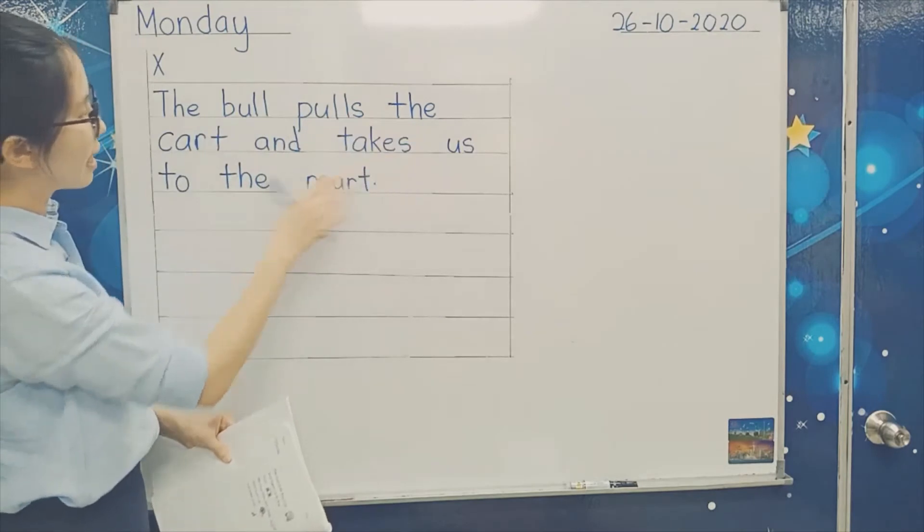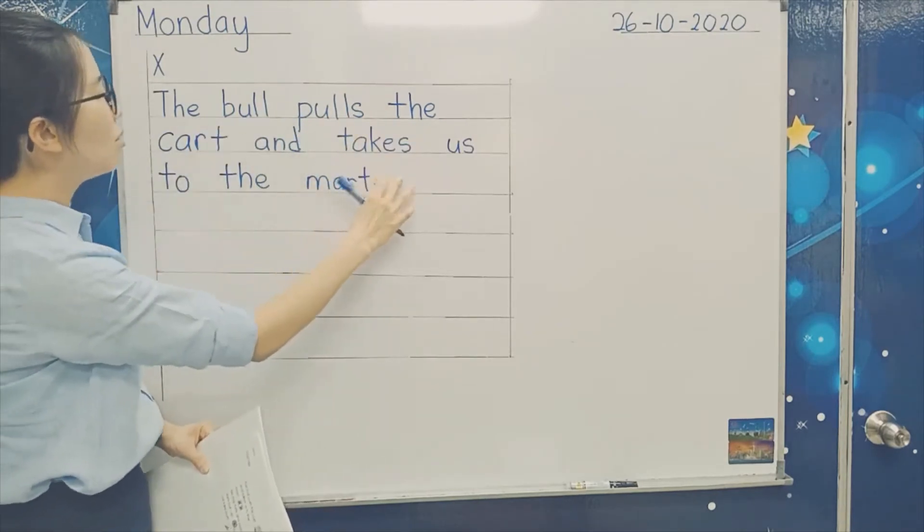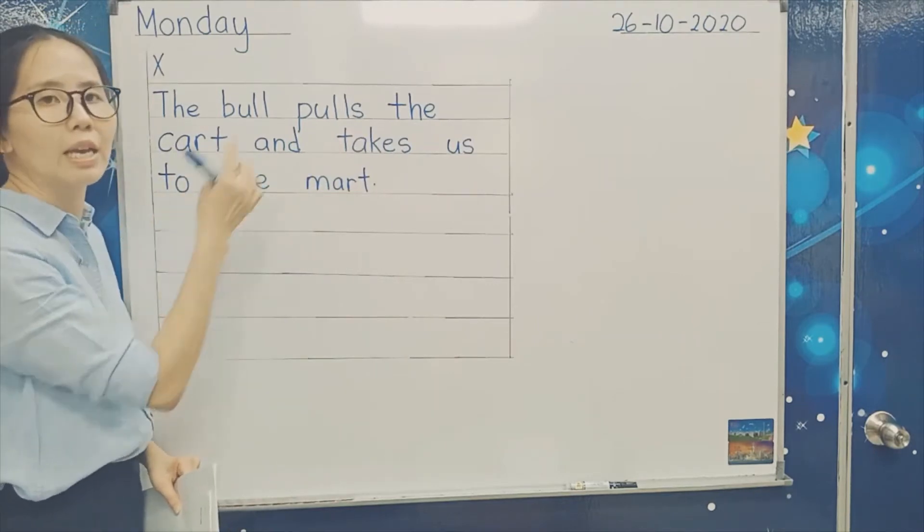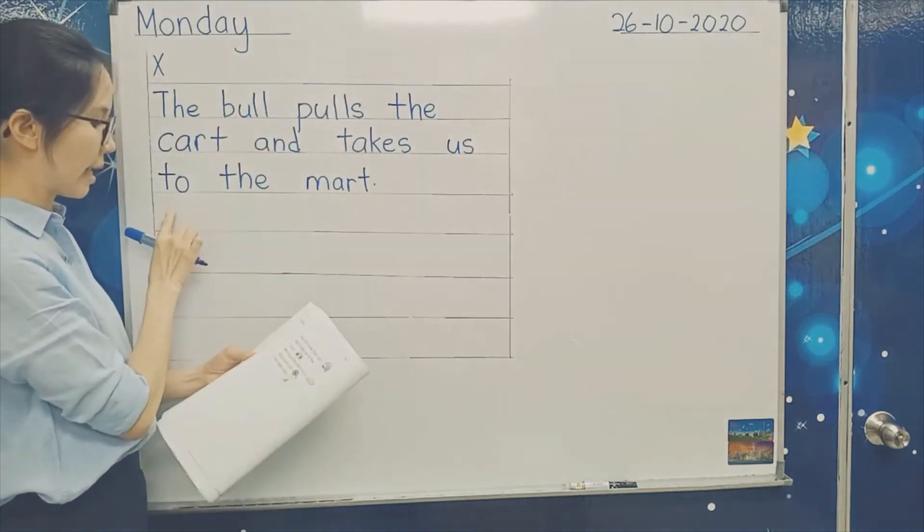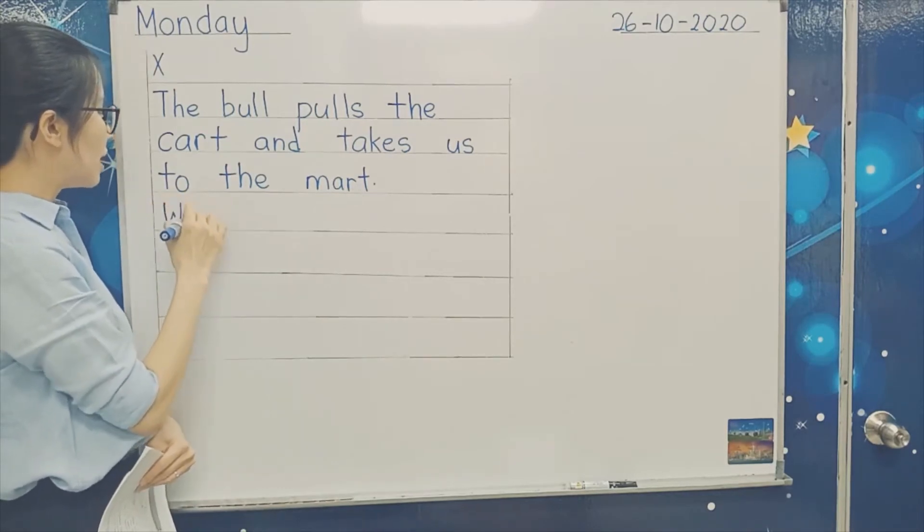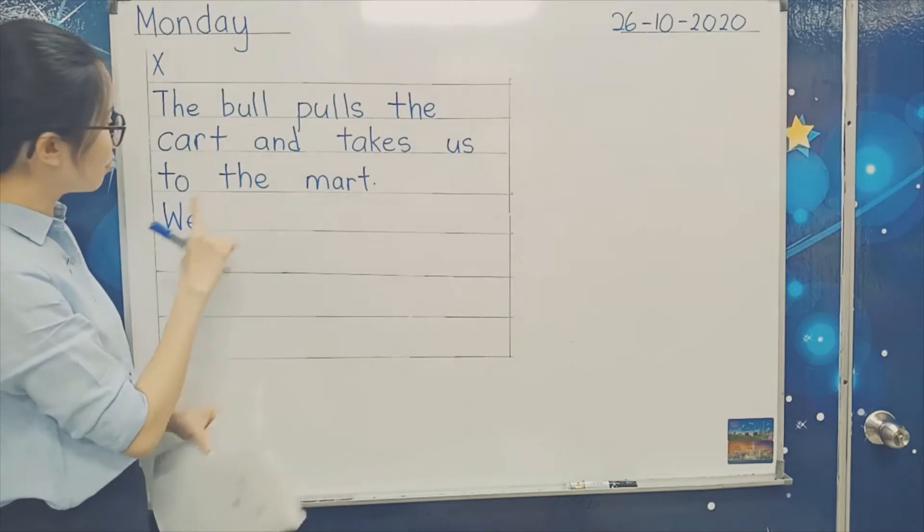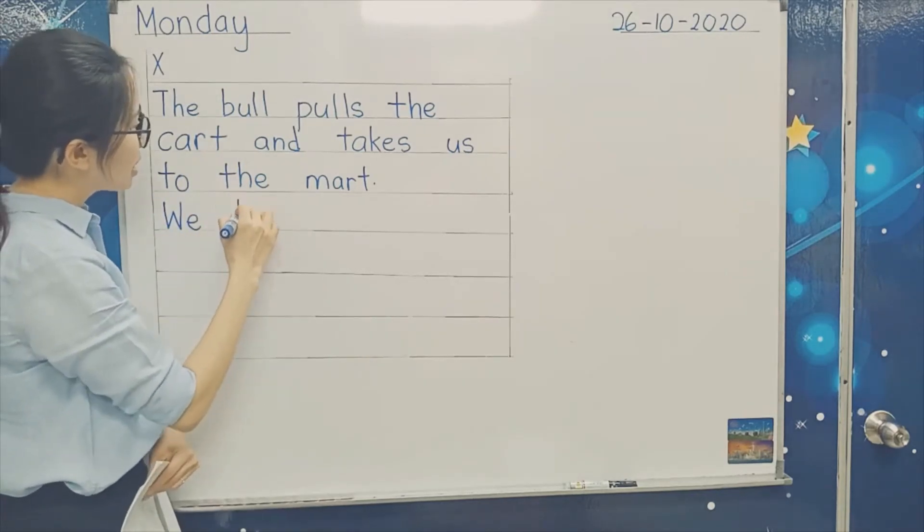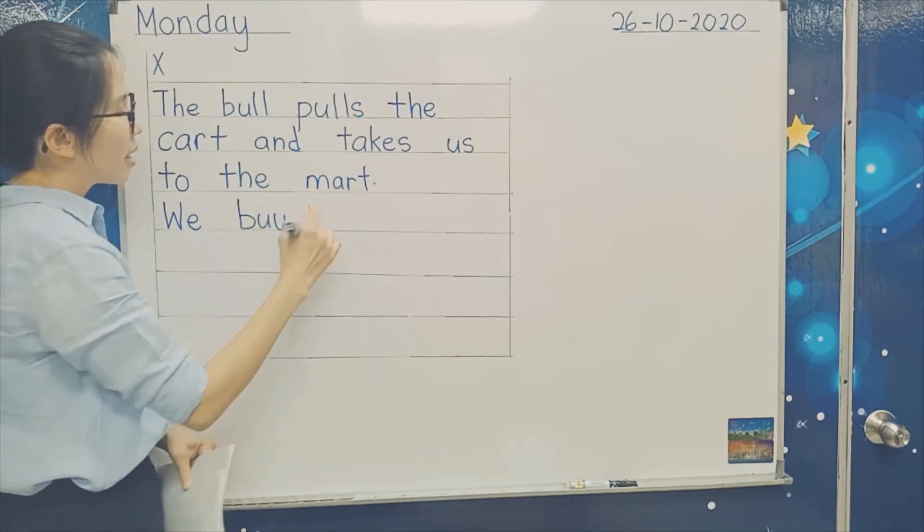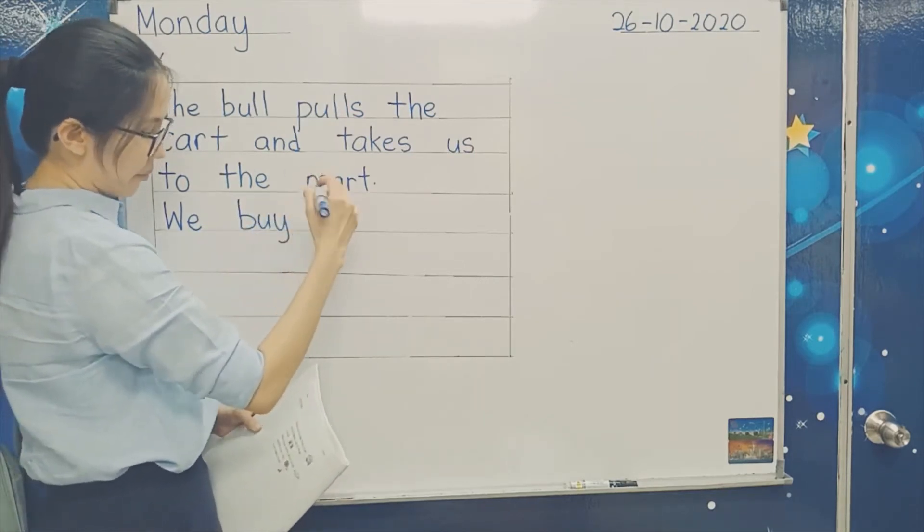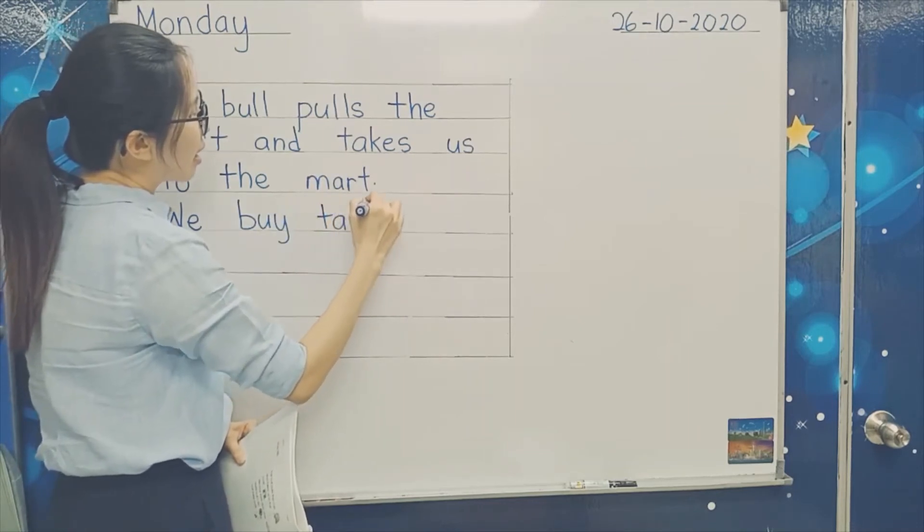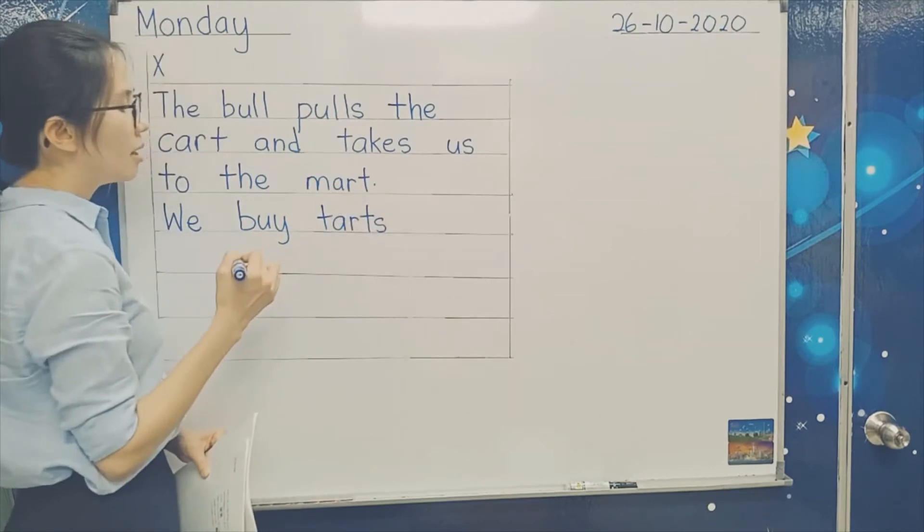So next one, this is not done yet. We have to write. So now, whether you have space or you have no space, I want you to go down one line. Go down one line. So you write here, W-E, we. And then you put one finger, B-U-Y, buy. And then you put one finger, T-A-R-T-S, tarts.